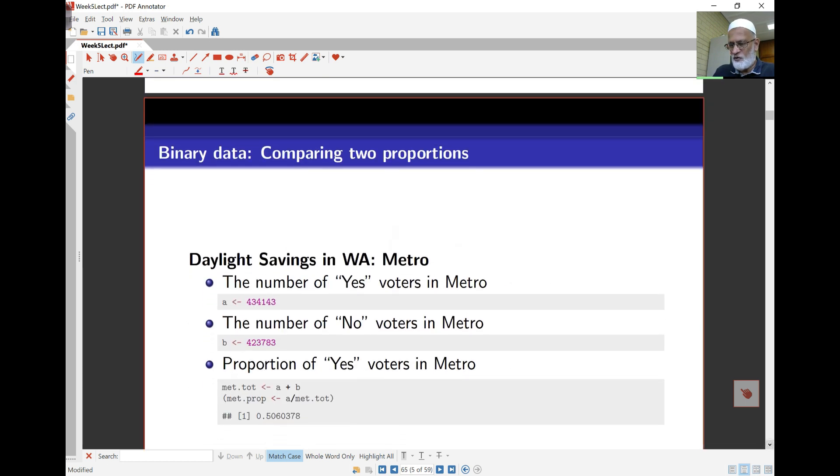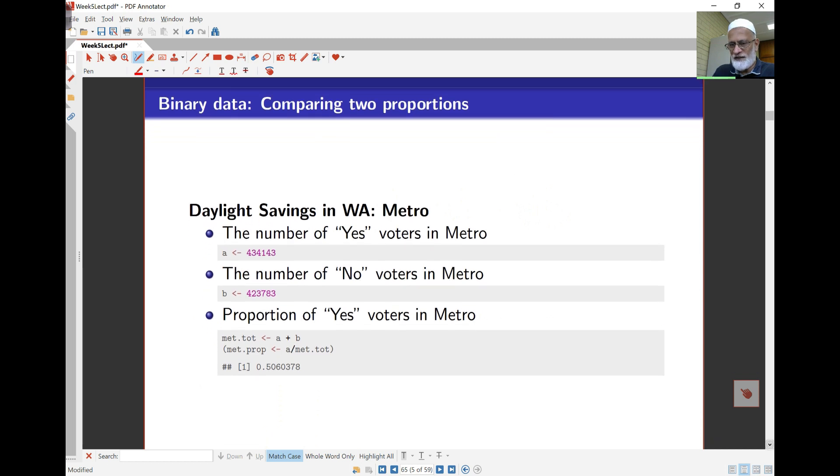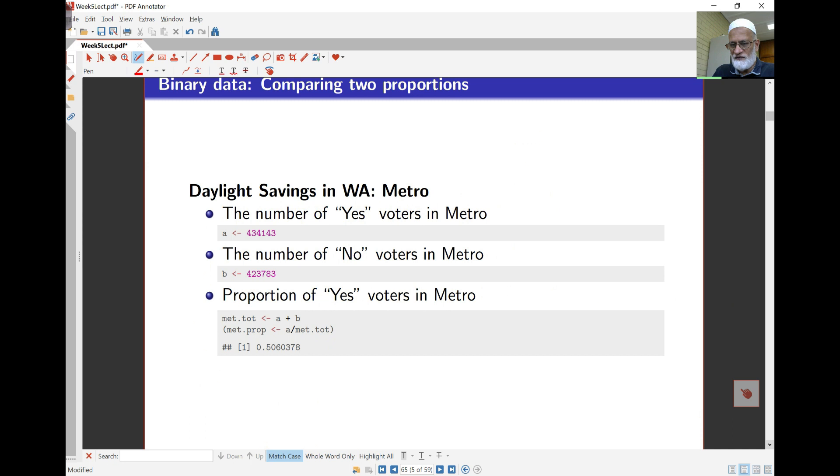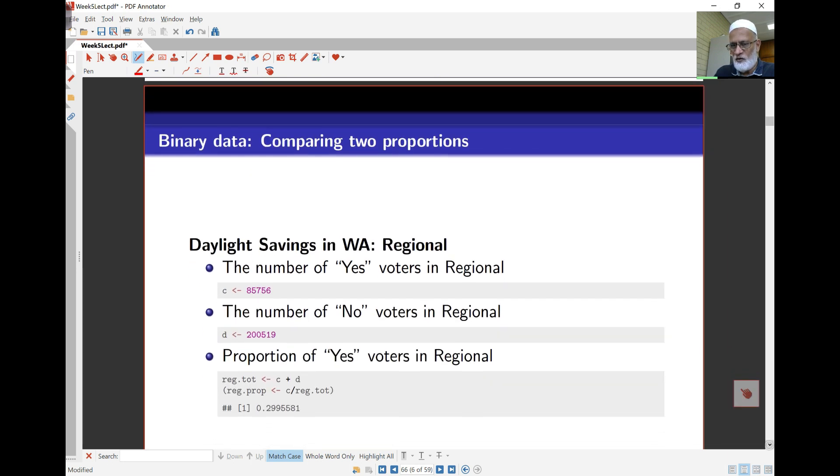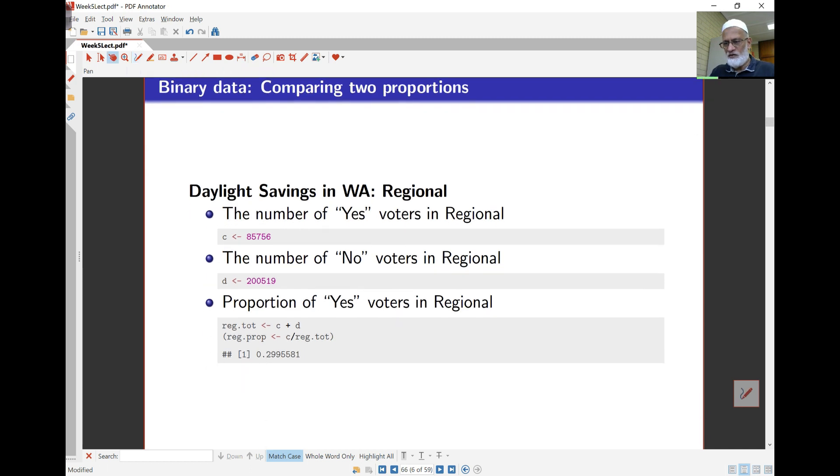How do we compare the two proportions? A is the number of yes voters in metro and B is the number of no voters in metro. So proportion here is A over the total, a little more than 50 percent. Whereas if you do the same calculation for regional WA, the ratio is only about 30 percent in regional Western Australia who support daylight saving.